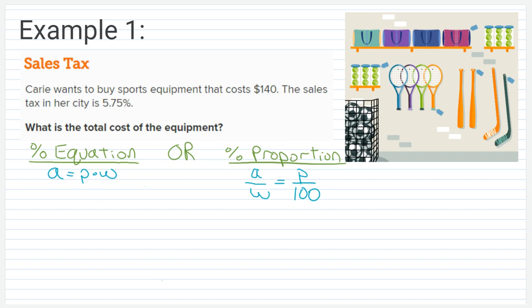So in example one, Carrie wants to buy sports equipment that costs $140. The sales tax in her city is five and seventy-five hundredths percent. What is the total cost of the equipment? First, what we're going to do is solve this in two steps. We're going to figure out the actual amount of tax that is being added on to her purchase cost. So we're going to figure out what is 5.75% of 140.